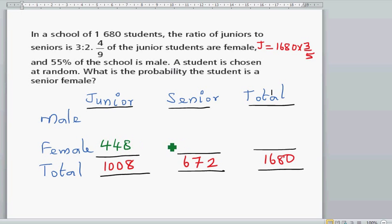So how many are male? Well, the males would be 1,008 minus 448, which would be 560. So that's 560. Always good to check. Yeah, that's right.